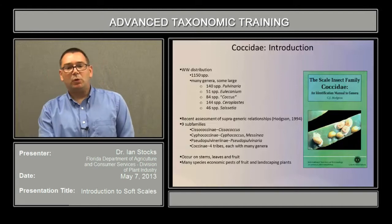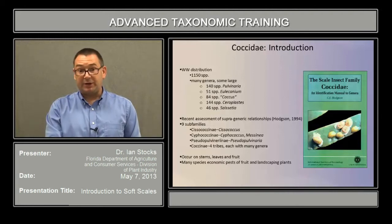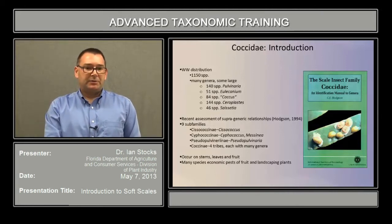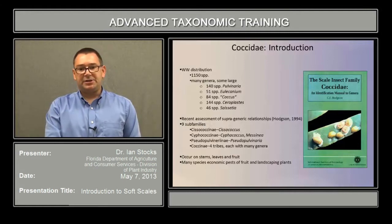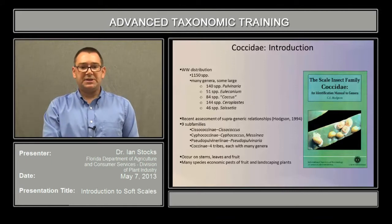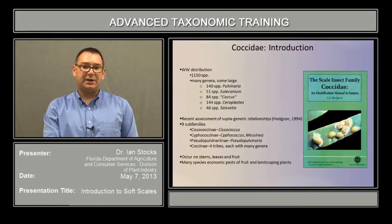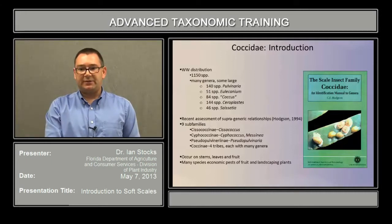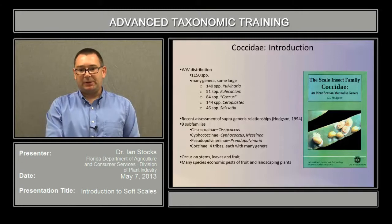This family is worldwide in distribution and currently contains 1,150 species, though this number grows every year. There are many genera, some of which are quite large — for instance, the genus Pulvinaria and genus Ceroplastes each have over 140 species in them. A recent assessment of the supergeneric relationships was published by Hodgson in 1994 in his identification manual, in which he recognized nine subfamilies.